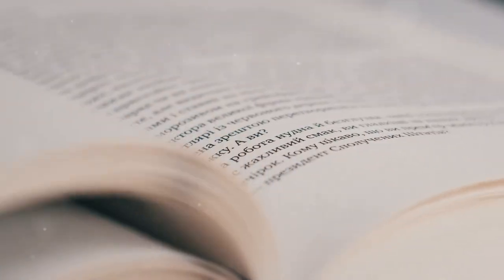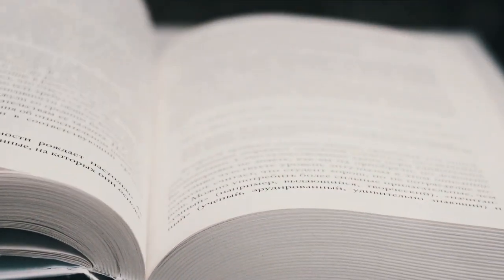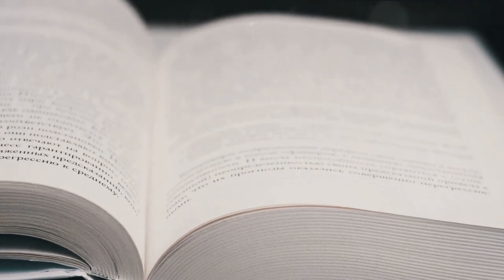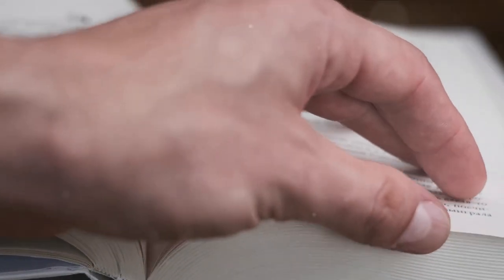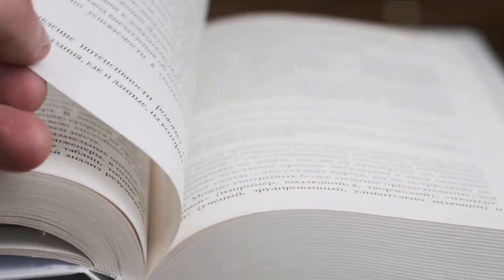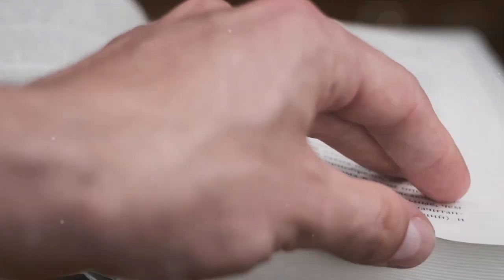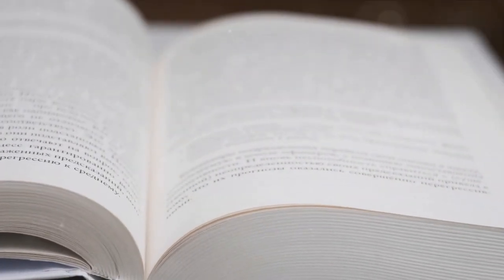This is where the importance of prioritizing essential details comes in. Think of your worldbuilding like a well-prepared meal. You wouldn't serve all the dishes at once, would you? Instead, you'd serve them in courses, allowing your guests to savor each flavor. The same principle applies to sharing your world. Give your readers the main course first: the characters, the plot, the setting. Then, gradually introduce the side dishes: the history, the magic systems, the cultures. This way, your readers can digest the details at their own pace, savoring the richness of your world without feeling overwhelmed.